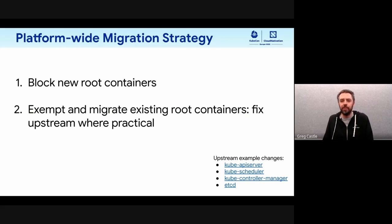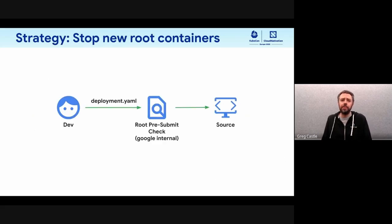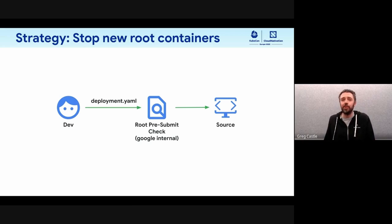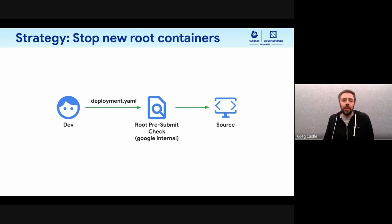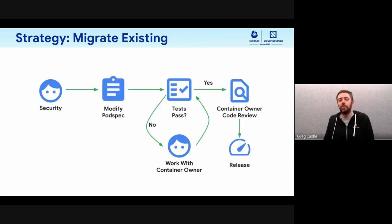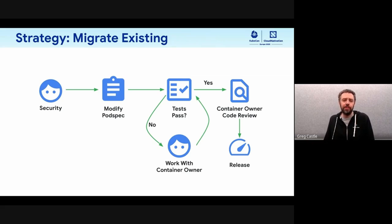To stop new root containers coming in, we use a pre-submit check inside Google. Pretty much everything in Google goes into source code, and if you're a GKE developer making a new GKE system container, you commit that YAML into source code, and we check it to make sure it's not running as root.